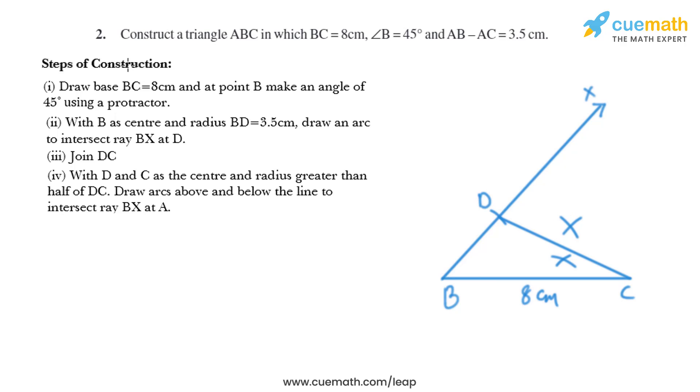Now we will draw a line that intersects BX and we'll name this point of intersection as A. In the next step we have to join AC and ABC is the required triangle. We'll join A and C and we get ABC as the required triangle.